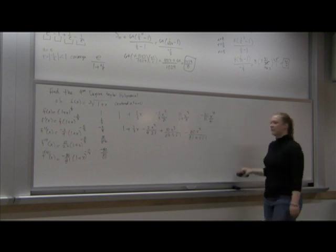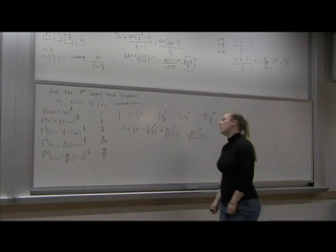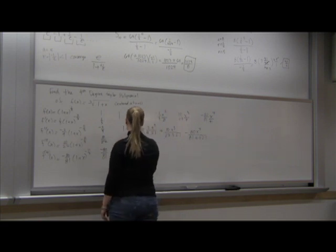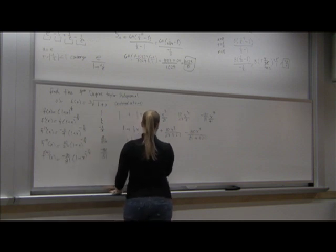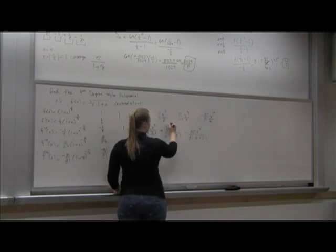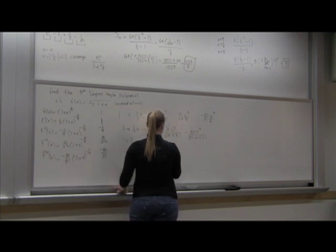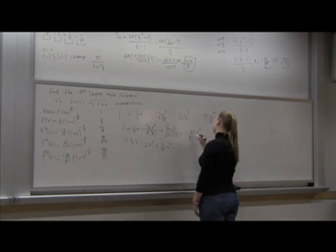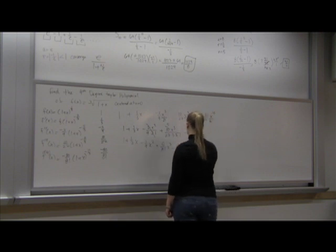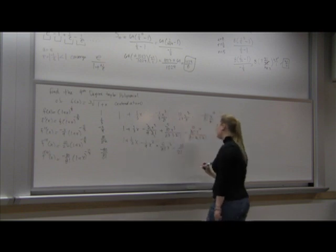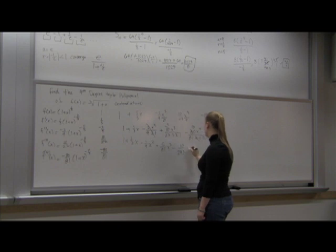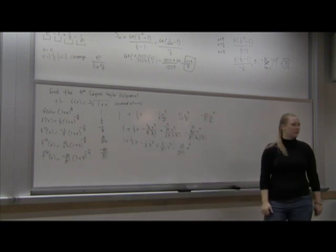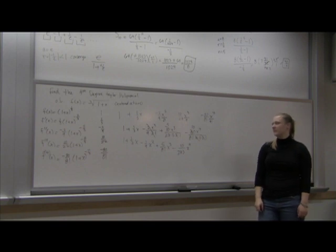And now we have to simplify. The first couple of terms don't simplify, but the twos can cancel, so I have negative one-ninth x squared. The ten and the two can cancel, so that I have five over eighty-one x cubed. The eighty can cancel with the four and the two to leave ten. So I'd have ten over eighty-one times three, two forty-three, x to the fourth. This would be your answer.